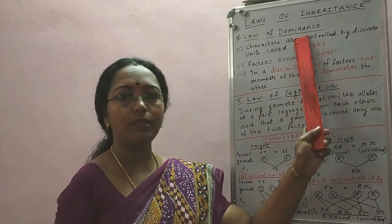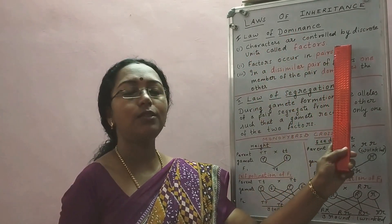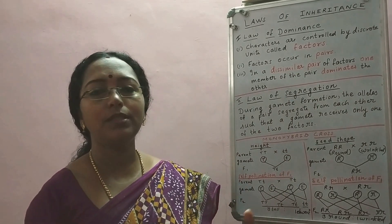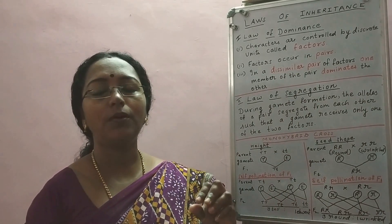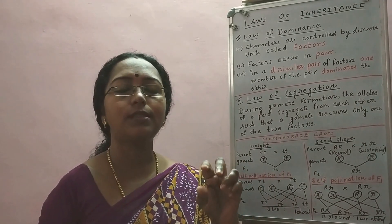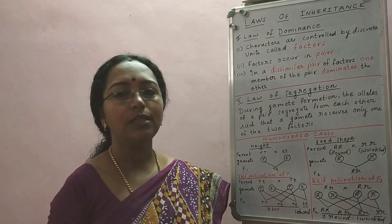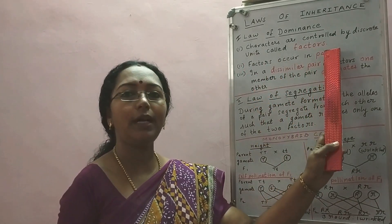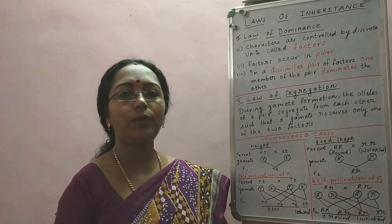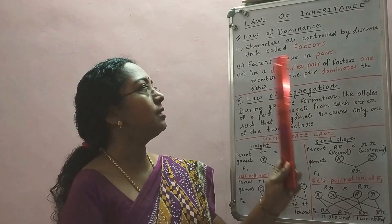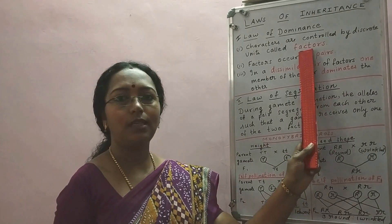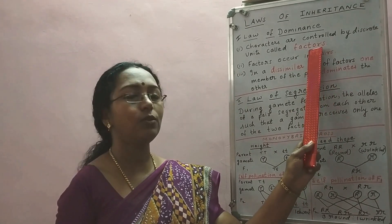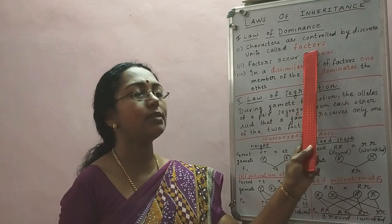According to the law of dominance, characters are controlled by discrete units called factors — this was already mentioned in the previous session. Each character in our body is controlled by small units, and those units Mendel termed as factors. The first postulate is: characters are controlled by discrete — meaning separate, unique — units called factors. Now we know what these factors are as genes; we now call these factors as genes, but Mendel called those discrete units which control the characters as factors.